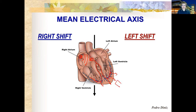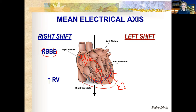The depolarization then travels cell by cell outward toward the subepicardial area. As a consequence, the mean electrical axis of a normal patient should point in this direction. If it deviates to the right, it means there is a problem such as a right bundle branch block. In that case, electricity first activates the left side and then travels cell by cell toward the right side of the heart.